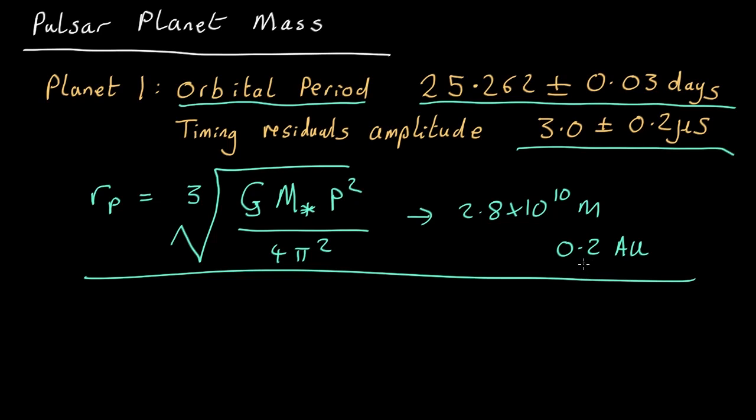How about its mass? Well, for that we use the fact that mass of the star over the mass of the planet equals the radius of the planet's orbit divided by the radius of the star's orbit. Now, we know the radius of the planet's orbit. We've just computed it up here. We know the mass of the star. What we need is the radius of the reflex motion of the star. And we get that from the timing oscillation.